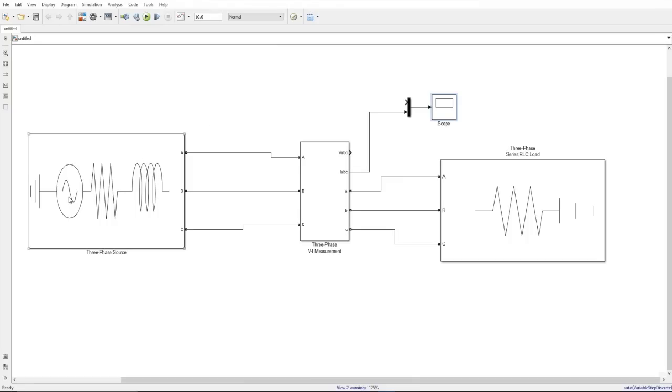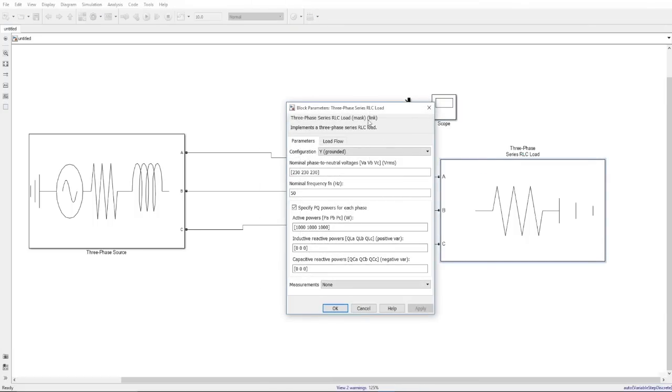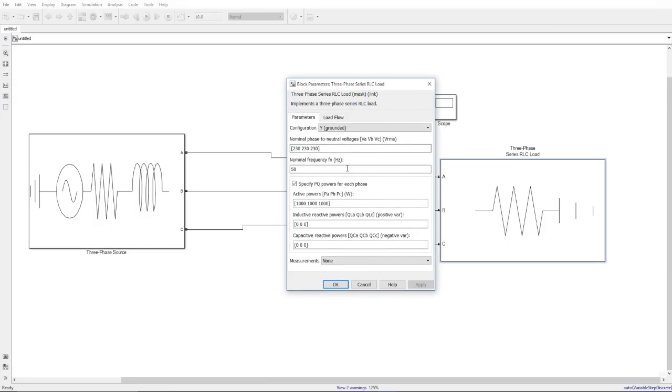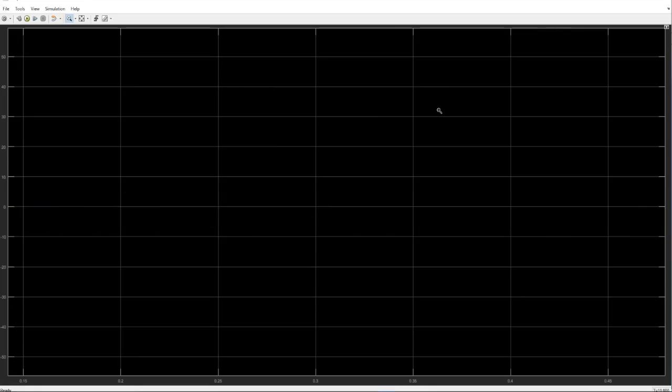So, this is our three phase source and this little block here will measure the current flowing through our system. The output of this is given to the scope which will show us the waveform of current. And this is our three phase load. For understanding purpose, I have made this load purely resistive and equal which here you can see. Let's find out if this system is balanced or not.